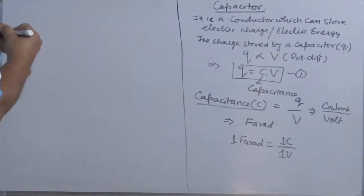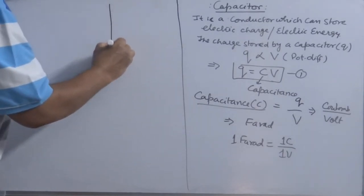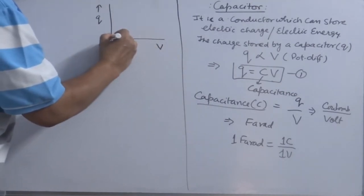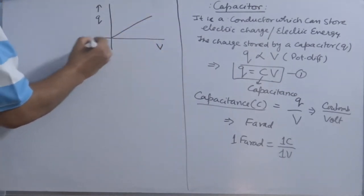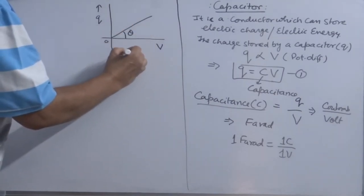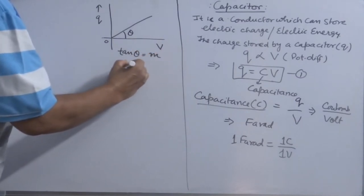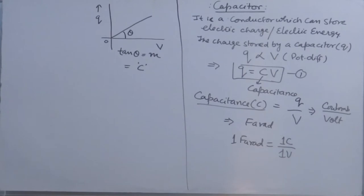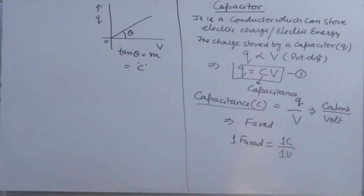If we look at the equation Q equals CV, it is a linear equation and you have to plot a graph between Q and V. This will be a straight line passing through the origin. If you are able to measure the angle, the tangent value — that is, the slope of the line — is equivalent to C. So you can also calculate capacitance by using a Q-V graph, just by calculating the slope of the curve.